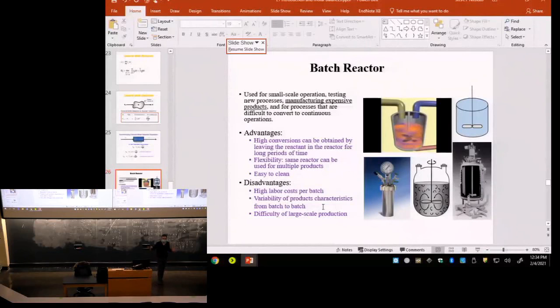So there's nothing else you do. You just wait for the reaction to finish, and then at the end of the reaction time you shut off everything, you remove the products, clean your reactor, and then you start again with a new batch. That's why it's called batch reactor - it's not continuous.